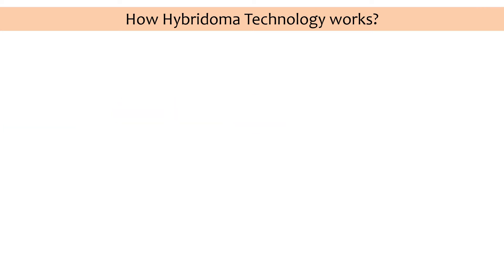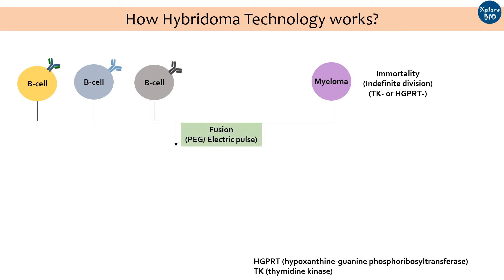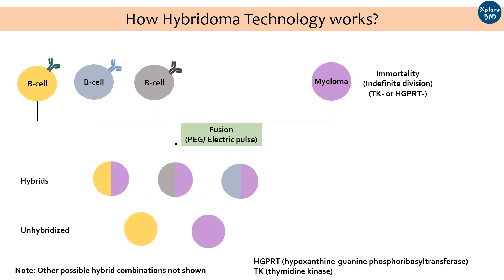Next, you fuse these two types of cells to get a hybrid cell. Fusion is done using polyethylene glycol or an electric pulse, which disrupts the cell membrane intermittently to allow two cells to merge and produce a hybrid cell. The process of cell fusion is not 100% efficient, and after fusion you will get hybridized cells as well as unhybridized B cells and myeloma cells. Hence, the hybrids need to be selected out of this heterogeneous population.